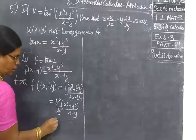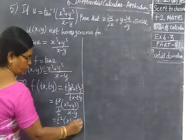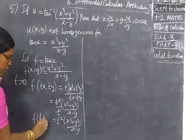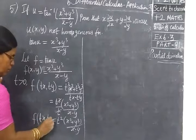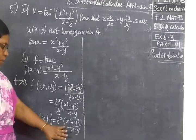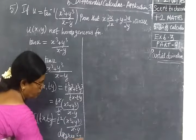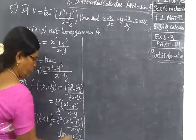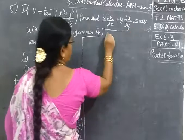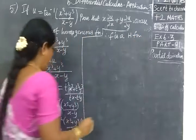So tan plus t square x cube plus y cube by x minus y. This implies f is a homogeneous function. Therefore, F is a homogeneous function.